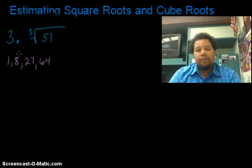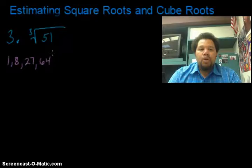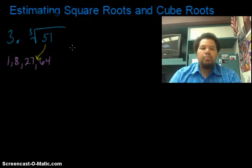Because remember, perfect cubes are the numbers when we cube them. So this is 1 cubed is 1, 2 cubed is 8, 3 cubed is 27, 4 cubed is 64, and so on and so forth. And just like I did in square roots, I got to figure out where is the 51 in between, and 51 is in between these two perfect cubes.